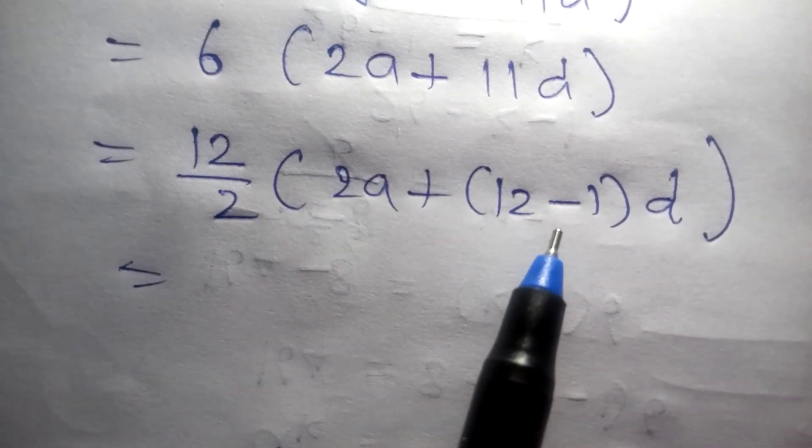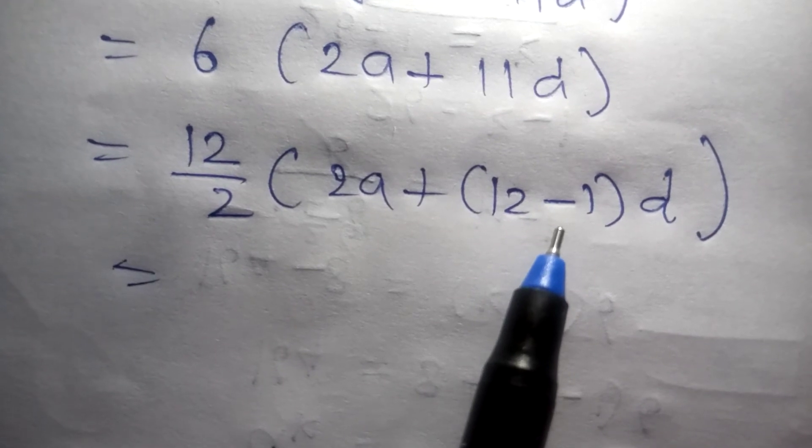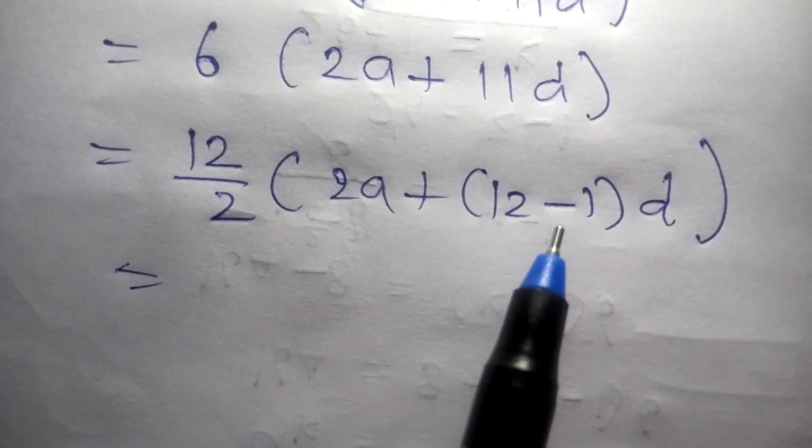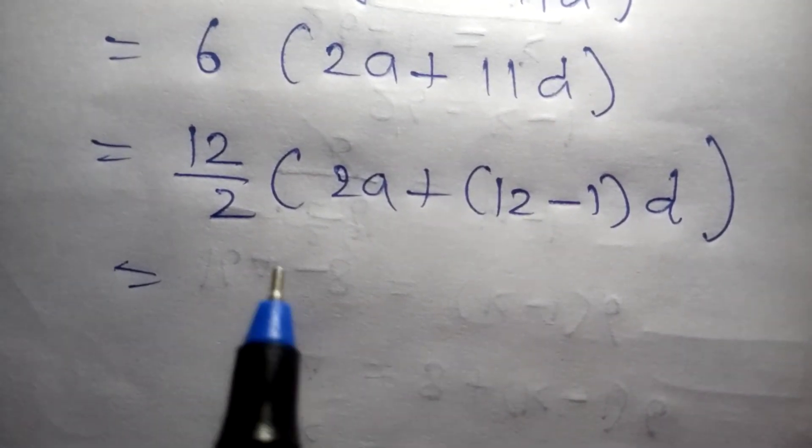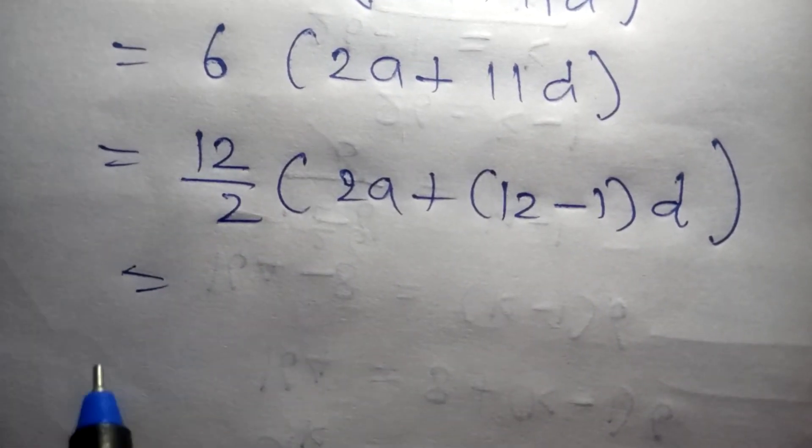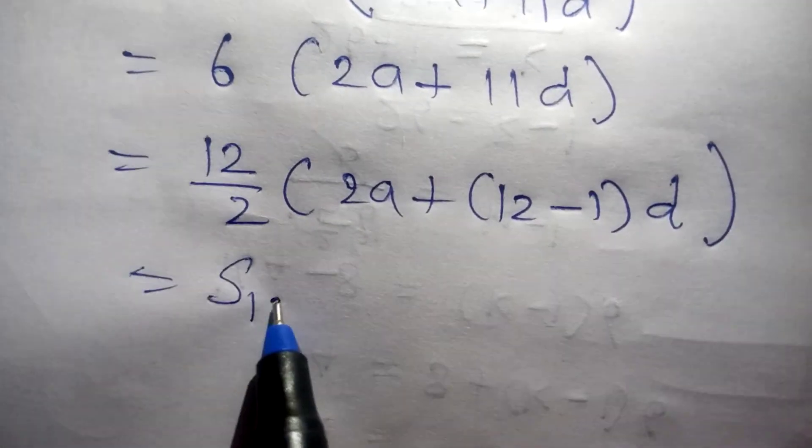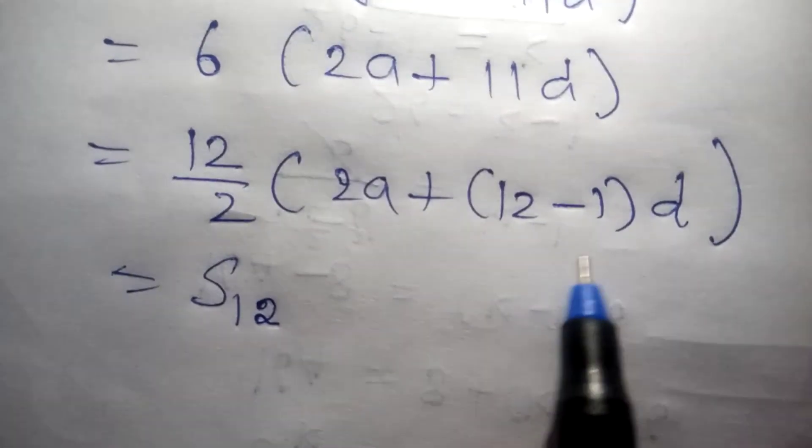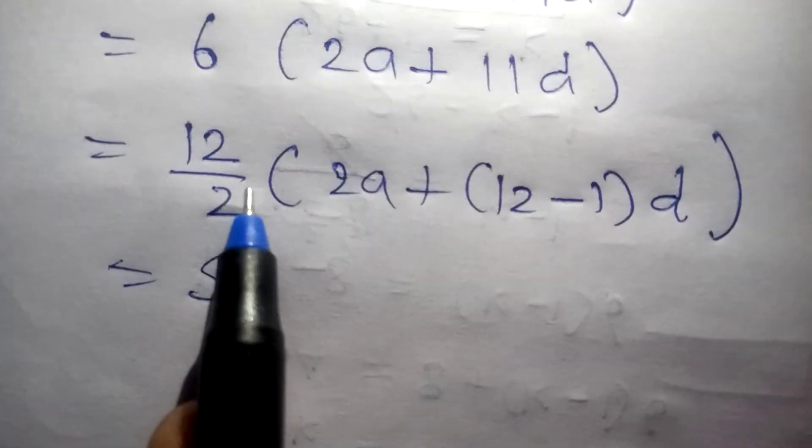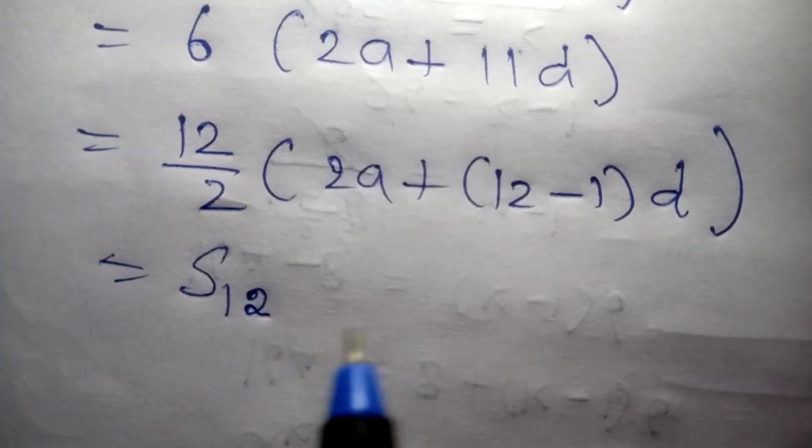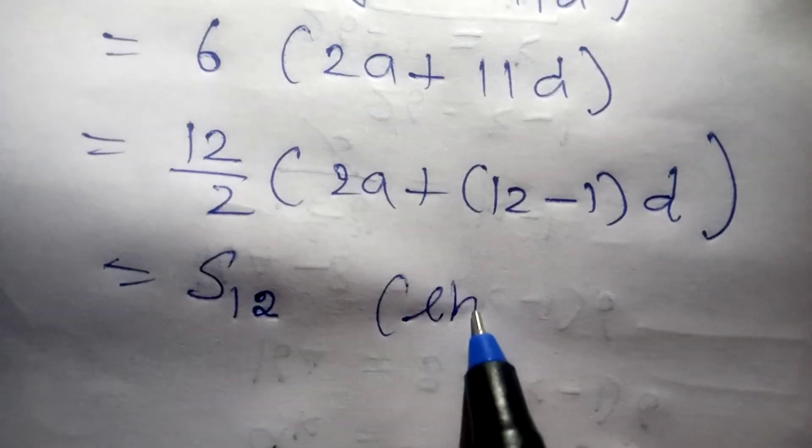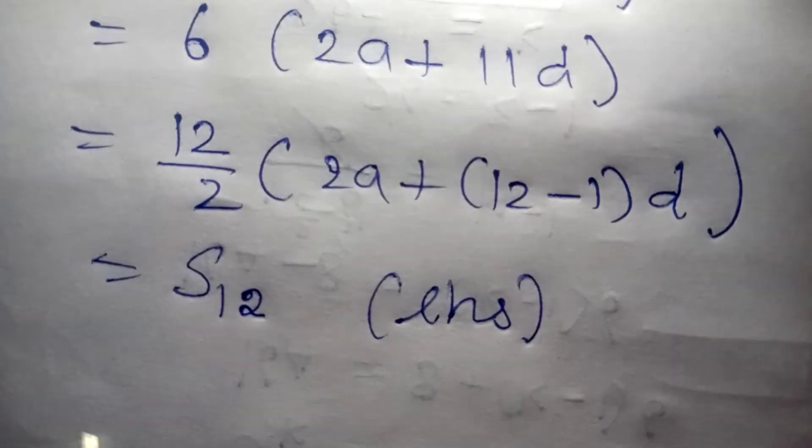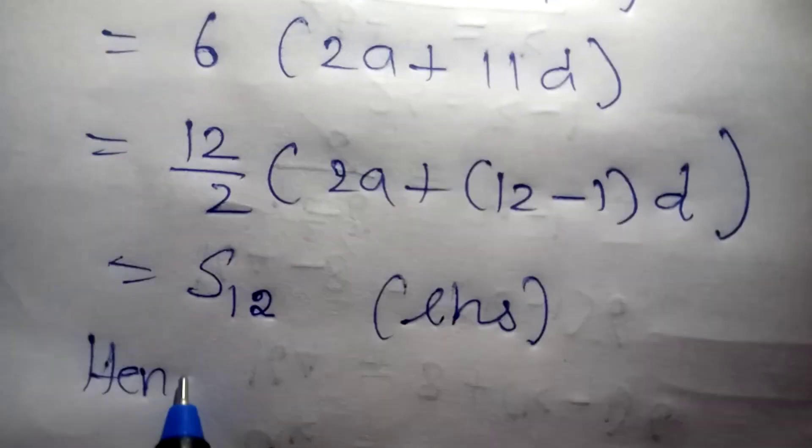Now it looks like n by 2, 2a plus n by 2. So we have replaced the 6 as 12 by 2, and we have replaced the 11 as 12 minus 1. Why we are doing this means? Because we need to show that S12 is equal to the final answer. I need to show that the final value should be the S12. So I know that this is a value of S12 only. So S12 I can write it now, because S12 is 12 by 2, 2a plus 12 minus 1. Indeed we are getting it correctly. So this can be replaced as S12. So that is our LHS value. That's what we want to show actually. So we can complete it with hence proved.